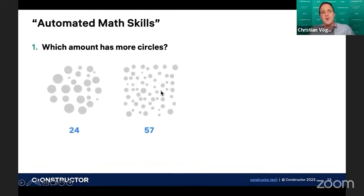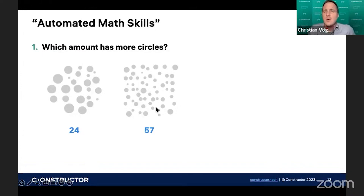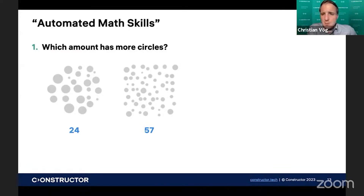It's actually 24 and 57 circles. But if I ask you, how does your brain solve this problem? How does your brain determine that there are more circles on the right-hand side? Who can answer this? Who knows how the brain solves this problem? I assume almost nobody knows how the brain does this. It's automated by the brain to solve tasks like this.